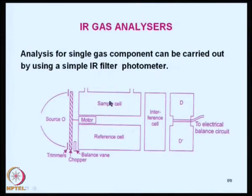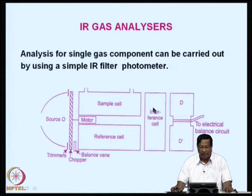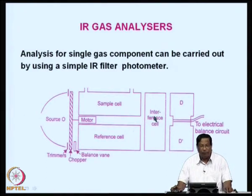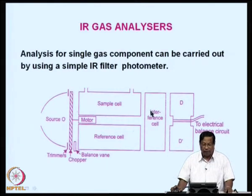The sample gas flows through one cell and the reference gas flows through another cell. There is a separate detector for each — sample gas and reference gas — connected to two bolometers which are interconnected by means of a diaphragm. There is a sample cell, a reference cell, and an interference cell, with two bolometers separated by an electrical balancing unit. In the interference cell, you can put any of the other process gases which may interfere in the analysis.